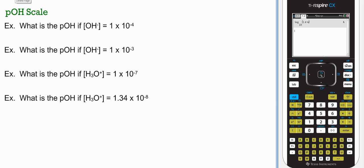So pOH scale. What's the pOH of hydroxide ion concentrations 1 times 10^-4? Same thing, pOH of 4, and it's basic. And we have hydroxide ion concentration 1 times 10^-3, your pOH would be 3, basic.